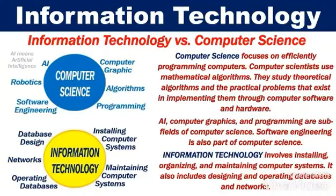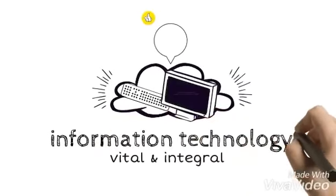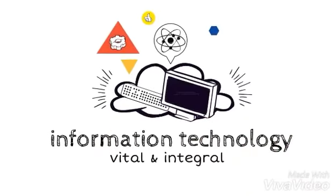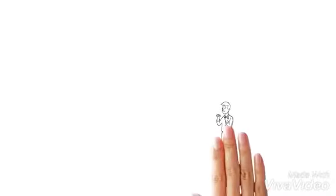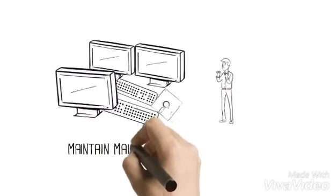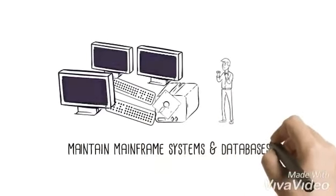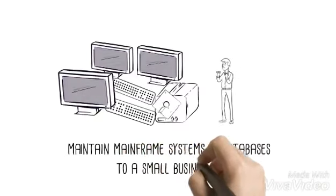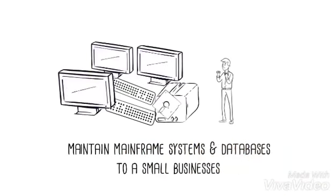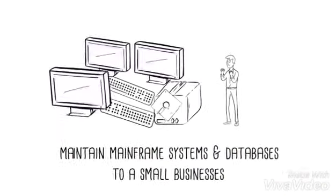Information technology, on the other hand, involves installing, organizing, and maintaining computer systems. It also includes designing and operating databases and networks. Information technology has become a vital and integral part of every business plan, from multinational corporations that maintain mainframe systems and databases to small businesses that own a single computer — IT plays a role.